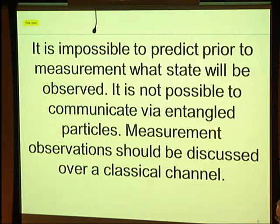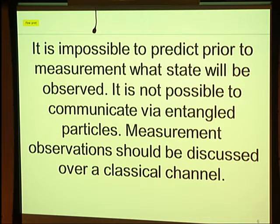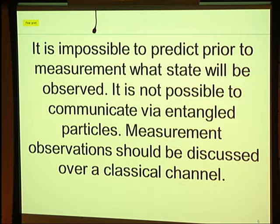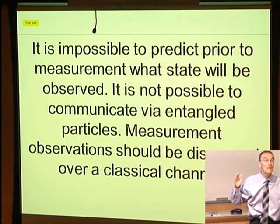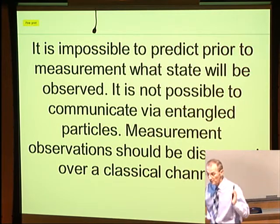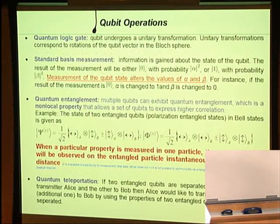Someone might say that means something can travel faster than the speed of light — superluminal speed. Not so. It is impossible to communicate via entangled particles alone. In order to recognize what happens, we really need to have a classical communication channel between the two parties. When we have a classical communication channel, there is no speed higher than the speed of light.